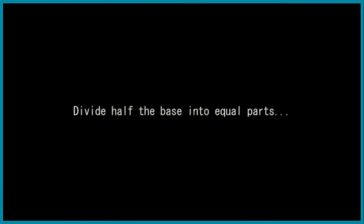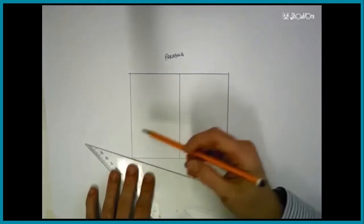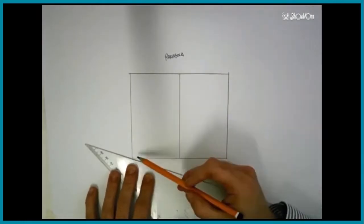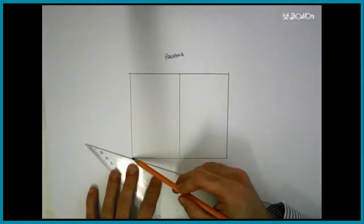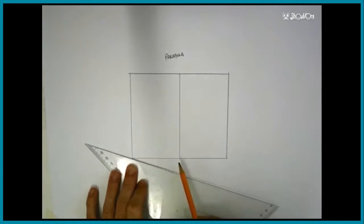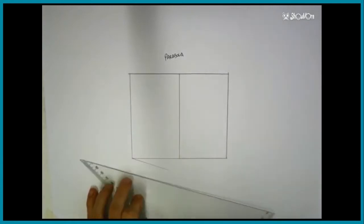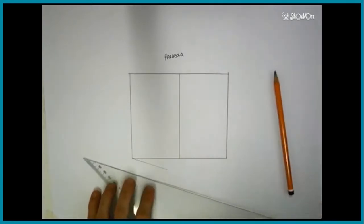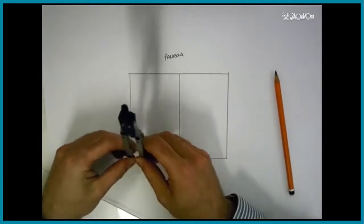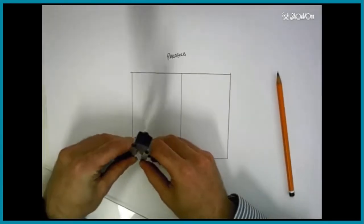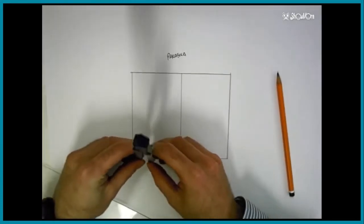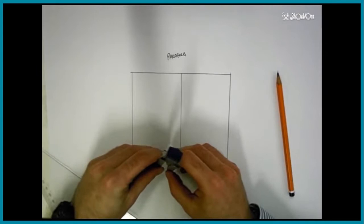We will now begin working on dividing up the parabolic curve. The first thing we do is taking half the distance on the bottom, we divide it into a set number of parts. To do this we will use our division of a line method. Normally four to five parts would be sufficient.